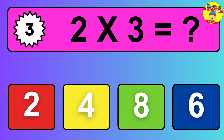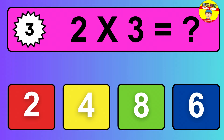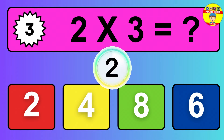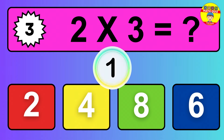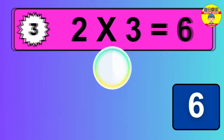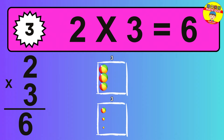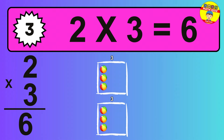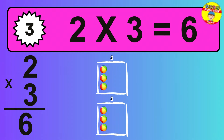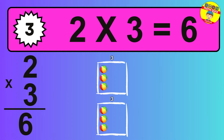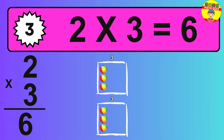Question 3. 2 times 3 equals what? The answer is 2 times 3 is 6. To calculate, we have 2 groups with 3 balls each one. So, how many balls do we have? 6 balls.